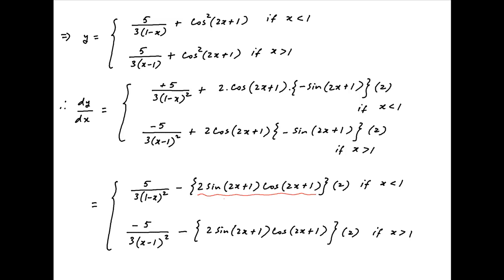Now, 2·sin(2x+1)·cos(2x+1) equals sin(2·(2x+1)), which is sin(4x+2), using the double angle identity.